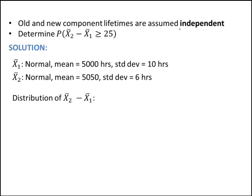The old and new component lifetimes are assumed to be independent — that's going to be important here. We want to determine the distribution of X-bar₂ minus X-bar₁. The distribution of the difference X-bar₂ minus X-bar₁ is normal, because this is just a linear combination of random variables, and both X-bar₁ and X-bar₂ are normal, so their linear combination is definitely normal.